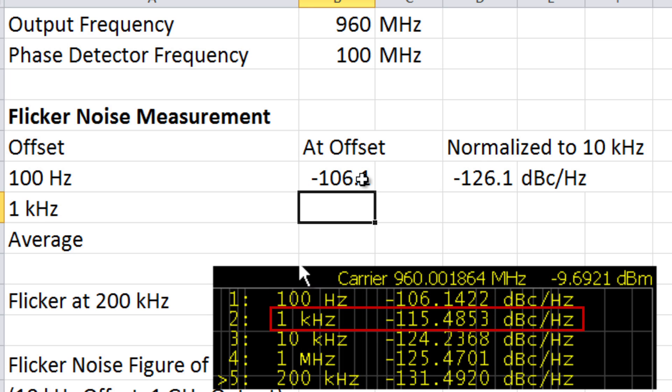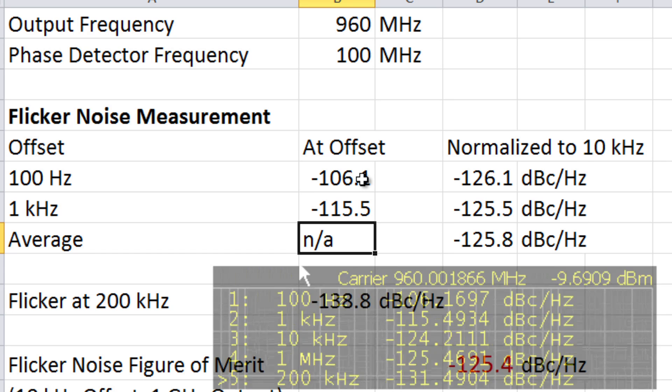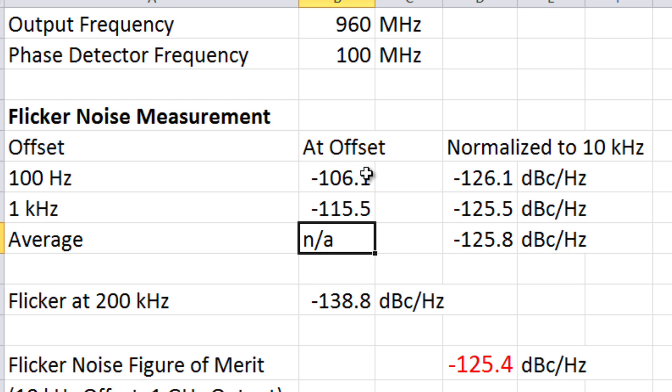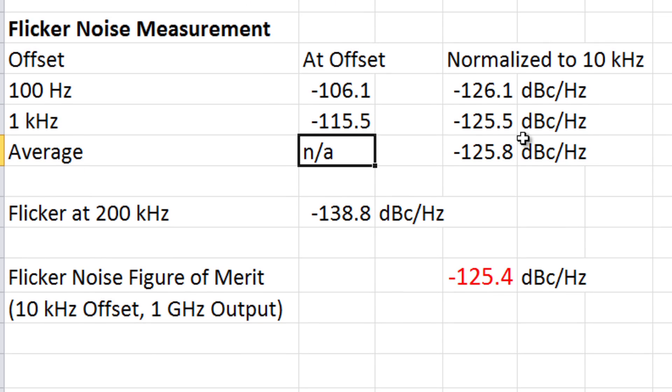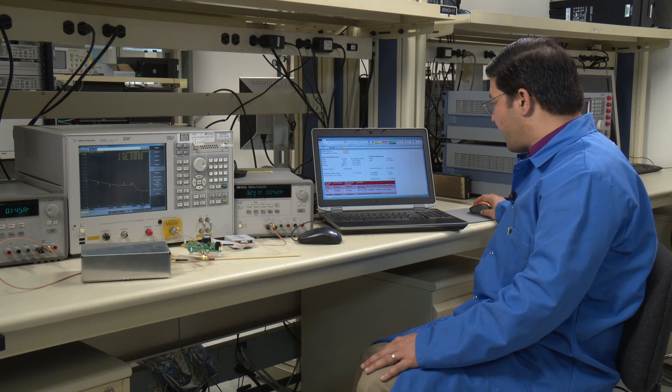And at 1 kHz, I see minus 115.5. So if I normalize these at 100 Hz and 1 kHz, the first one normalizes to 126.1, the other one 125.5. I average them together, 125.8. Now this is at 960 MHz, and I really want to do the phase noise measurement at 1 GHz. So when I normalize this number to 1 GHz, I get 125.4. Data sheet claims minus 124, but I have a very low noise Wenzel crystal, a very good setup, and I'm able to achieve minus 125.4.